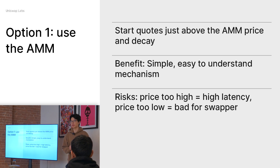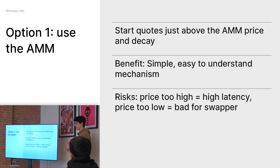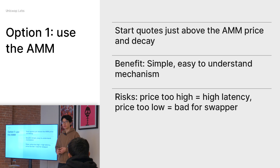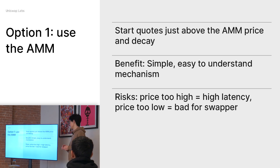One simplistic method is to just take the AMM price, add some buffer to it, and decay from that elevated price down to the user's minimum amount out. It's very simple to understand. The inherent risk is that if we set the price too high, it's bad latency. Uniswap really cares about user UX — we don't want users waiting 10 blocks or five minutes for an order to be filled. We try to keep orders to a relatively short lifecycle, which also helps prevent price risk, price movement, and failed orders from slippage.